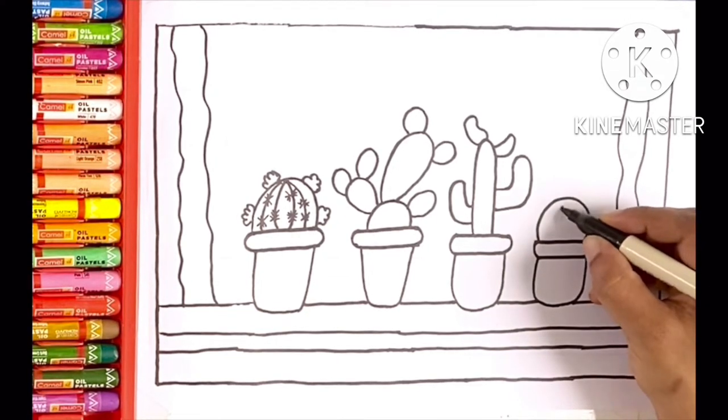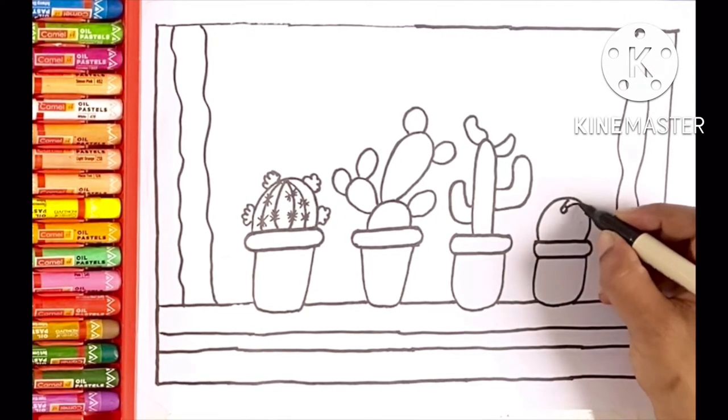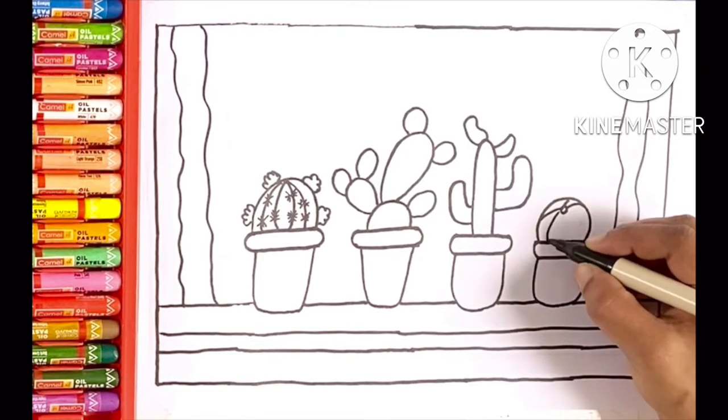In the fourth pot, just like the first one, draw a semicircle and curves inside.